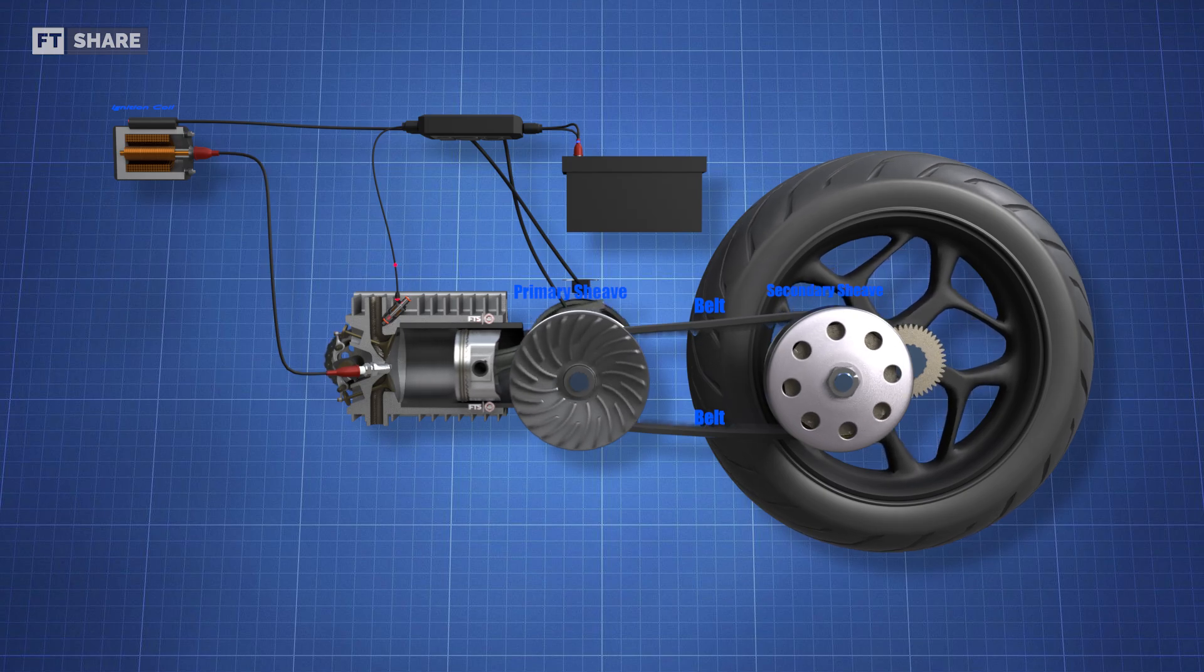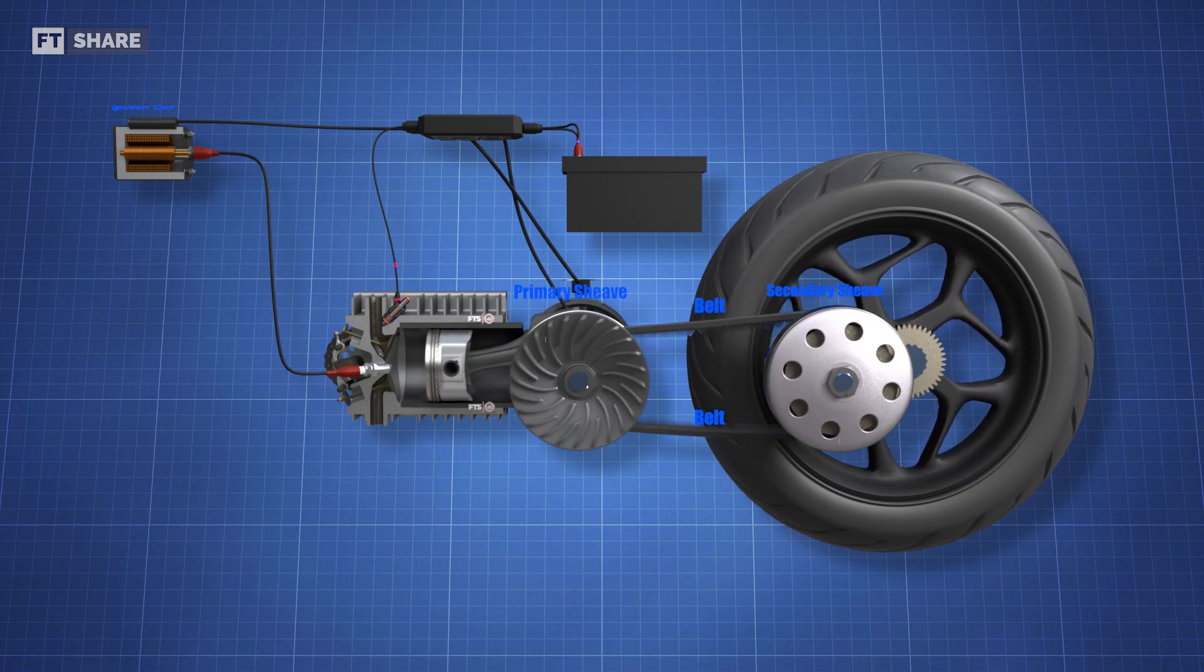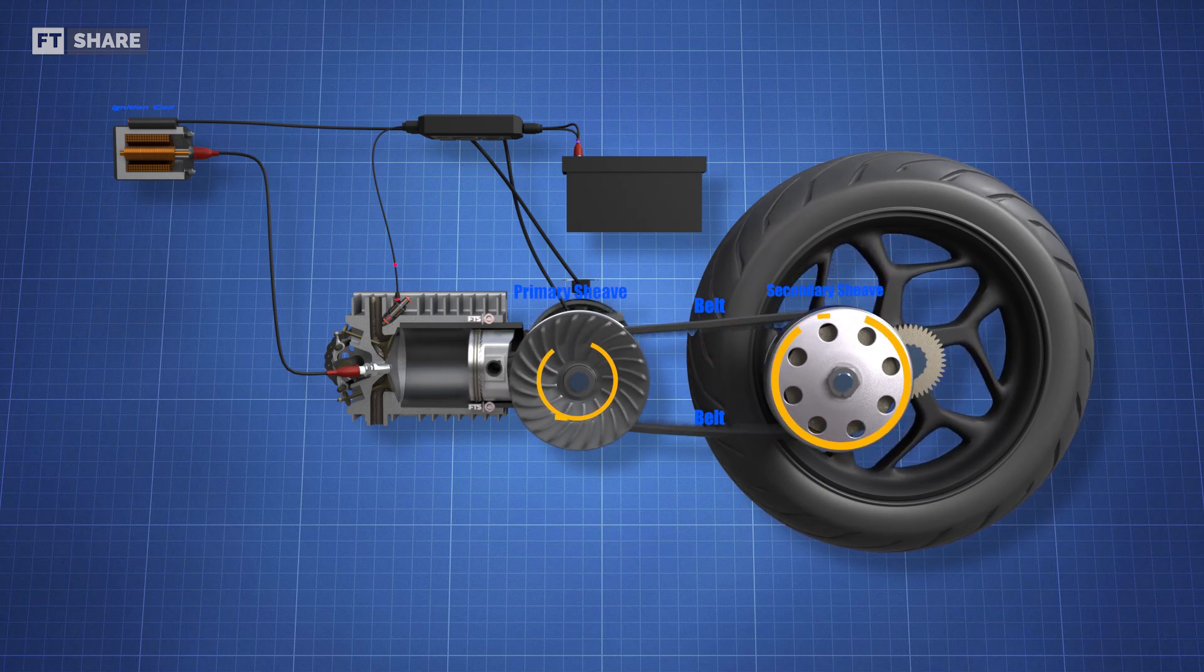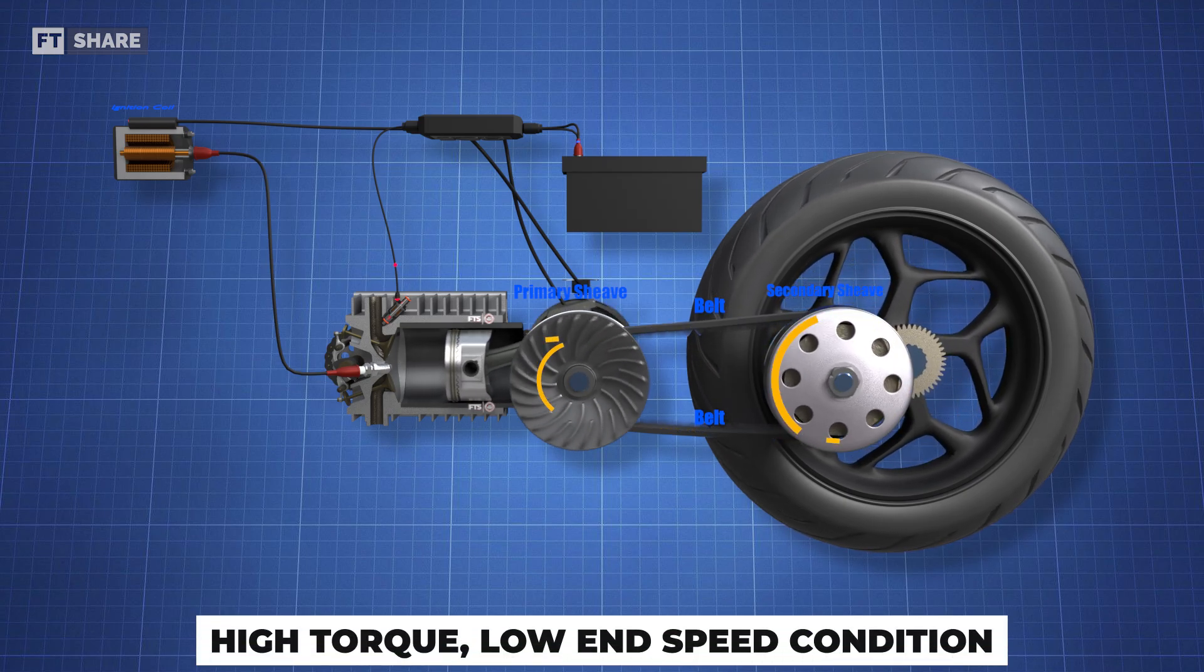On the other hand, at the drive pulley or primary sheave, the axial stiffness of the belt will push the primary sheave to its farthest position. This causes the primary sheave to have a minimum diameter. This is a high-torque, low-end speed condition.